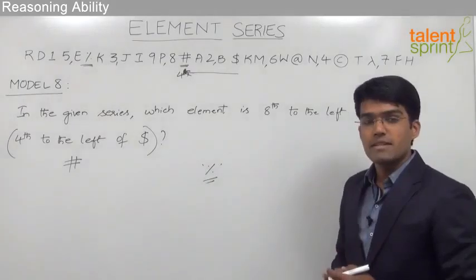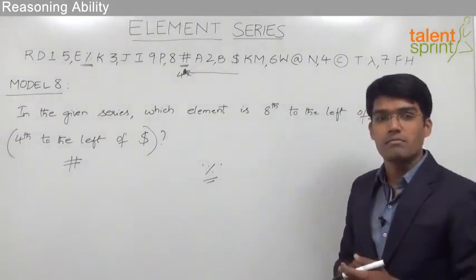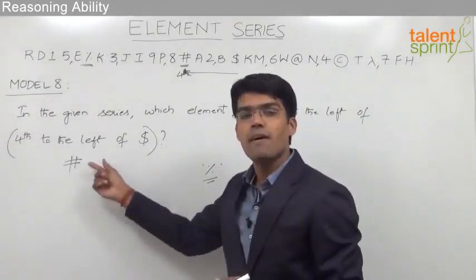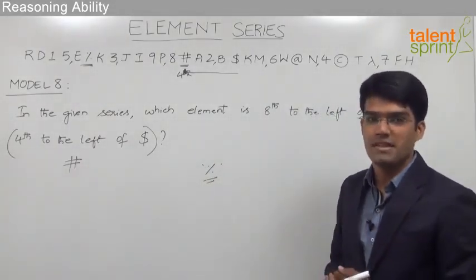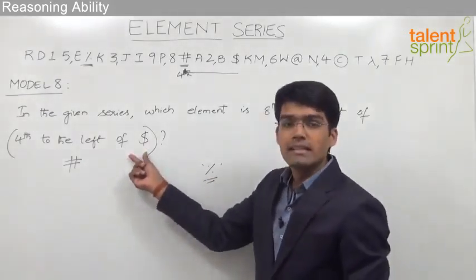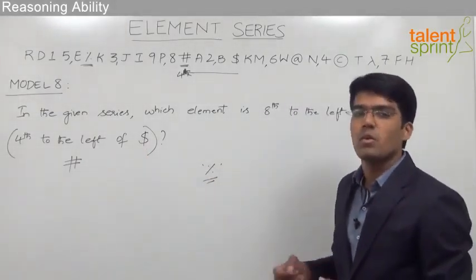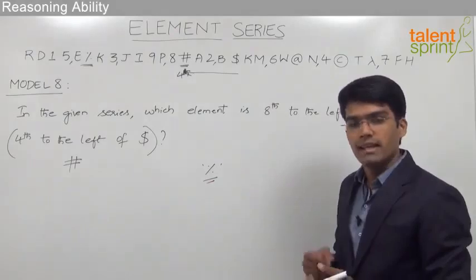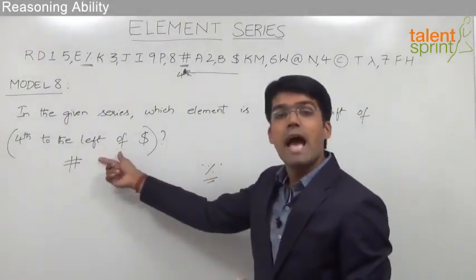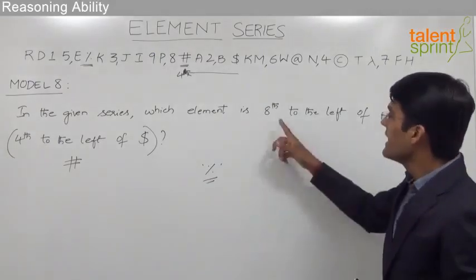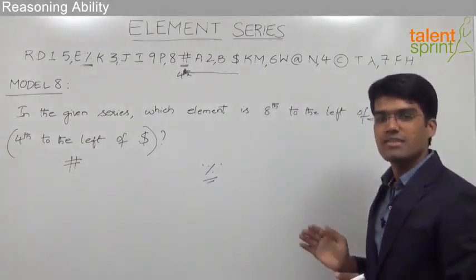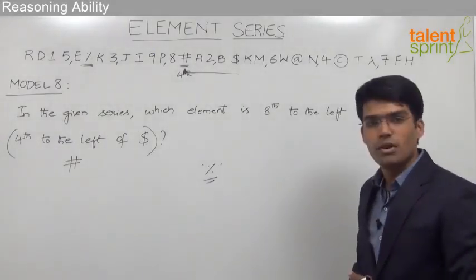If we compare this with Model 4: in Model 4, whenever there is a left and left combination, we take the difference of positions. But in this model, since the question is with respect to an element, the difference of positions will not work. Here, in case of a left and left combination, we add the two positions — that is, 8 plus 4 is 12 — so the answer can be taken as the 12th element to the left of dollar.